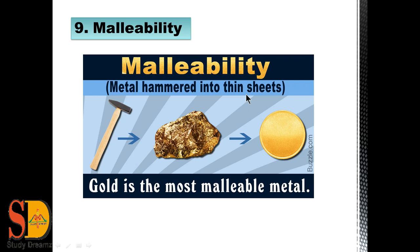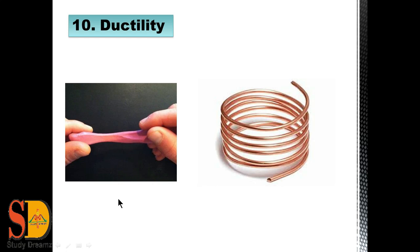The ninth property is malleability — malleability is a property that allows a metal to be hammered into thin sheets. As you can see in this process, when a material is struck with a hammer, it gets converted into thin sheets. Gold is the most malleable metal, which is why ornaments and jewels are made of gold or silver. The last property is ductility — ductility is a property that allows metal to be drawn into wires. Gold and silver are the best examples of ductile metals. When we stretch the metal, it can be converted into thin wires, which are used to make different types of objects.